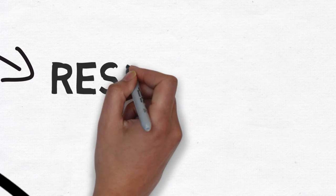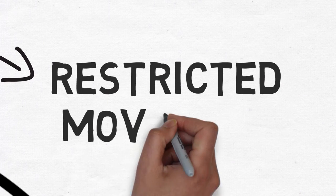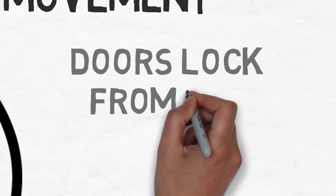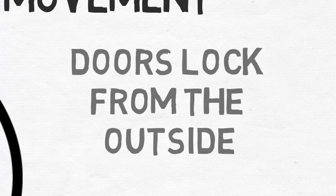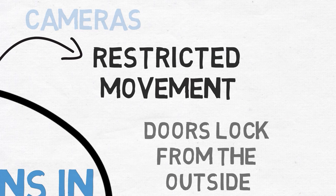Notice if the victim's movement is restricted or monitored. You should be suspicious if the doors lock from both sides or only from the outside or if the victim is monitored by people or cameras.